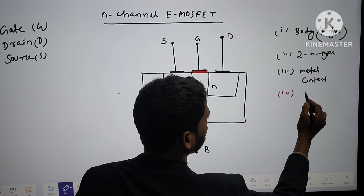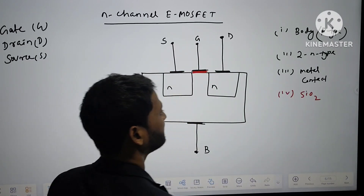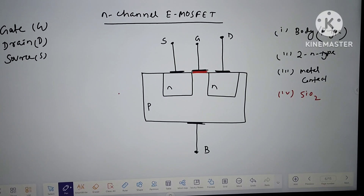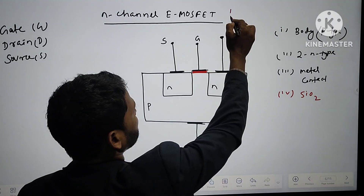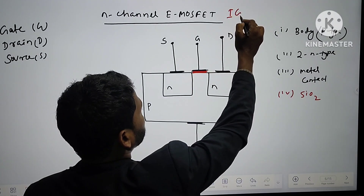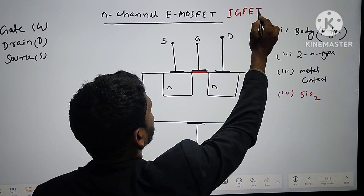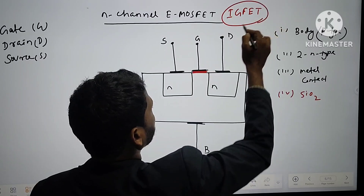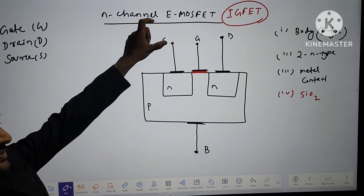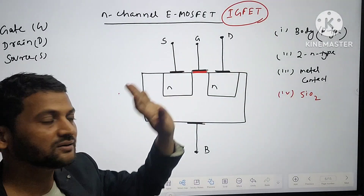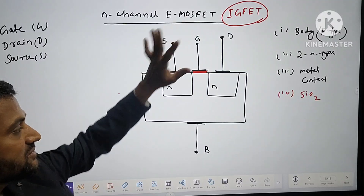This is very important. Silicon dioxide acts as an insulating material. That is why it is called IGFET — Insulated Gate Field Effect Transistor. The gate is insulated, meaning current cannot cross this insulating layer.